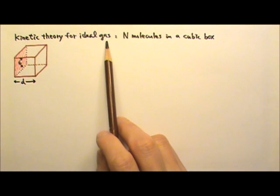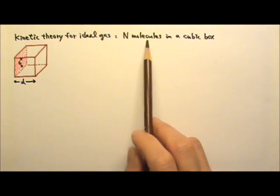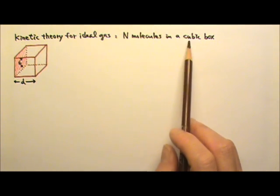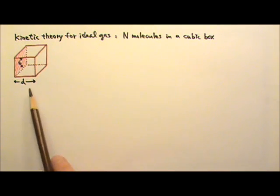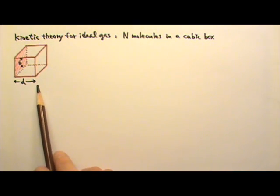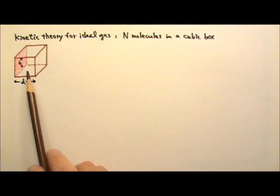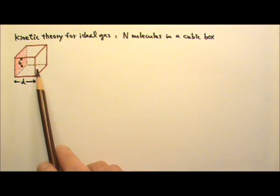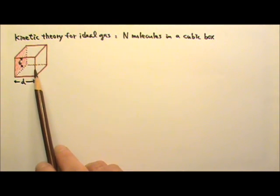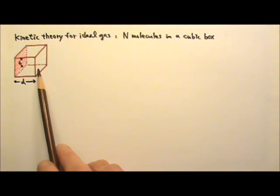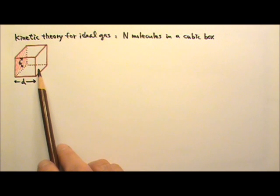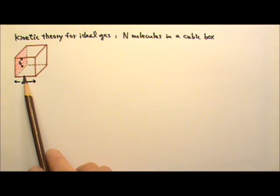Consider an ideal gas with n molecules inside a cubic box with each side d. The molecules doing random motion inside the box would collide elastically with each other and with the sides of the box.